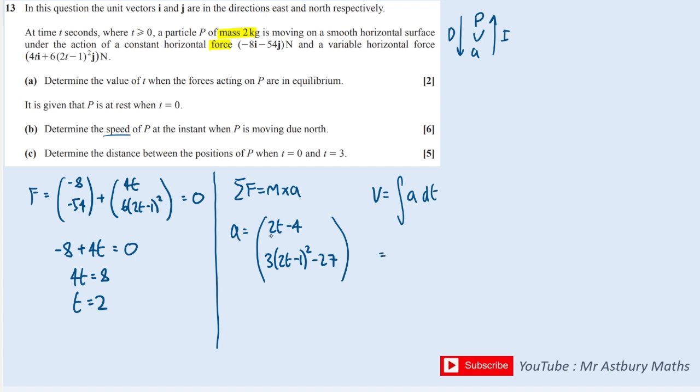Let's integrate this acceleration. The top line, I'm going to up the power and then divide by the new power, so that's T squared and minus 4T. I'm going to integrate this by using the reverse chain rule. Upping the power to a 3, dividing by 3 will cancel the times by 3, and then dividing by 2, which is the derivative, gives me a half. And minus 27 goes to minus 27T, plus ci and cj for the constants of integration.